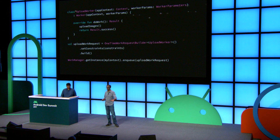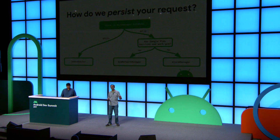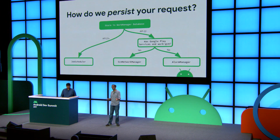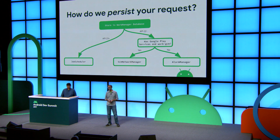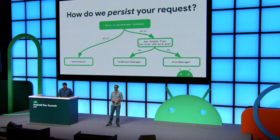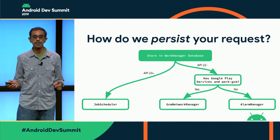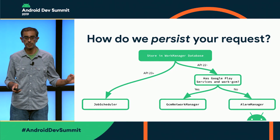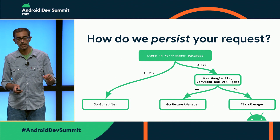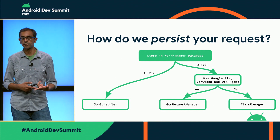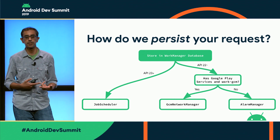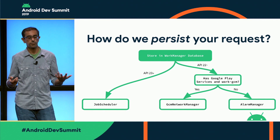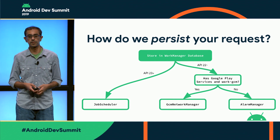What happens at this point? This is very important to understand because it'll have repercussions throughout the rest of your code. First, how do we persist your request? The first thing we do is store it in the WorkManager database. This is our source of truth for everything. Nothing else we talk about is actually controlling the source of truth. So if you want to know if your work is running, has finished, has failed, or has retried five times — all of this is stored here.